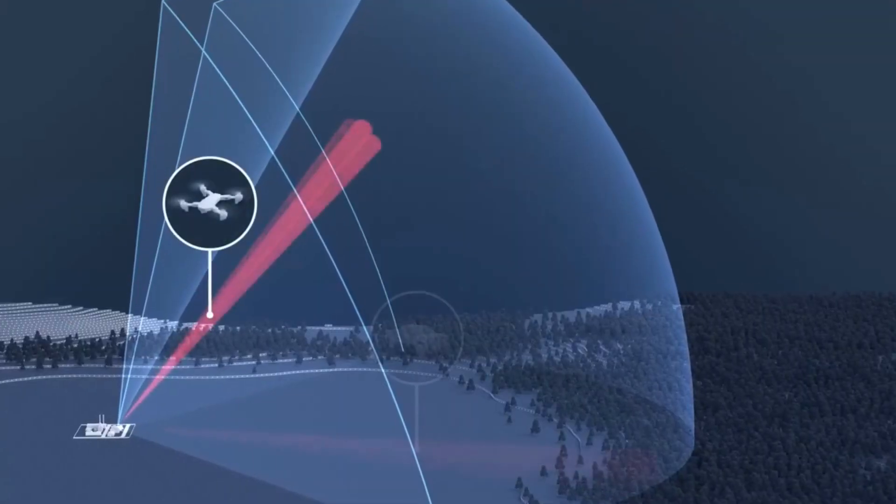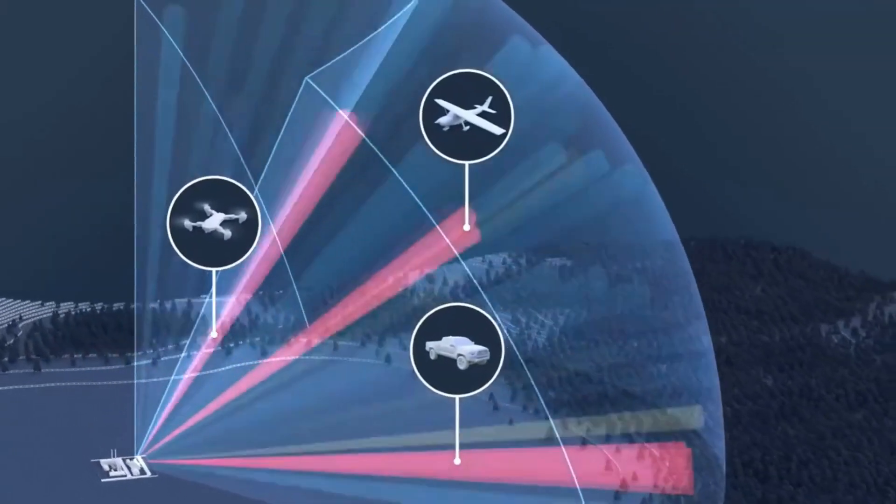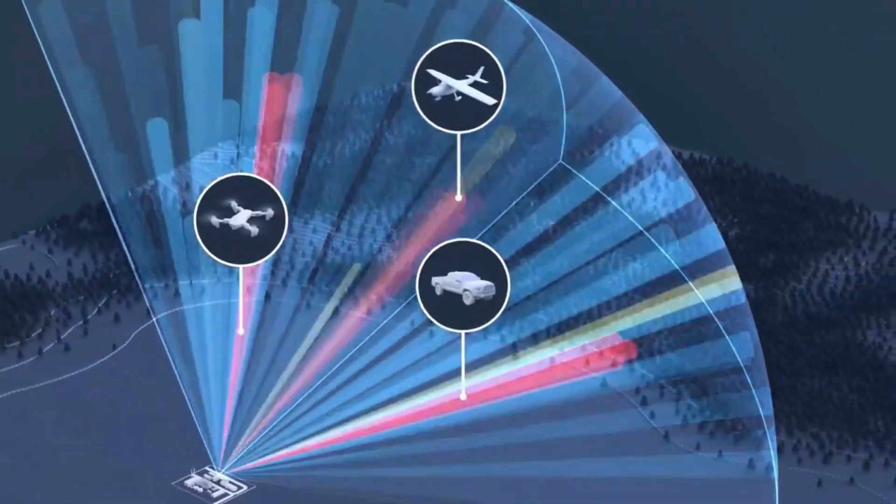Echoguard can track multiple objects with its fast update rate while simultaneously searching the field of view for new objects.